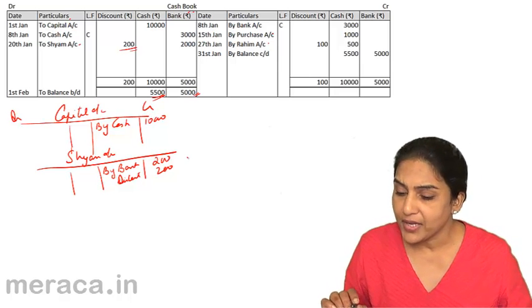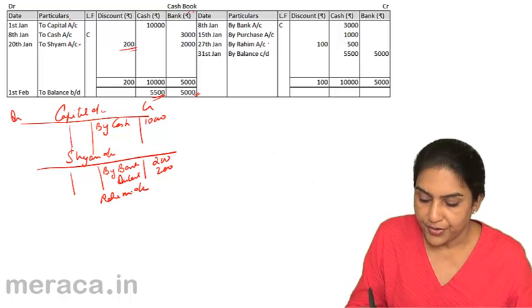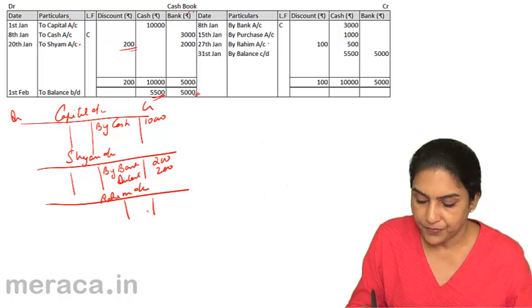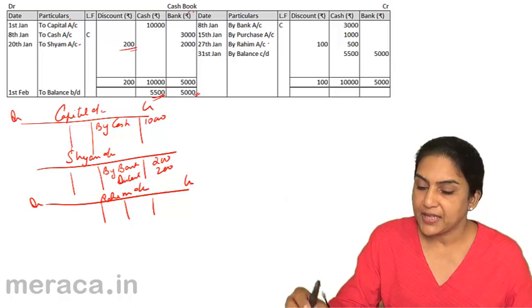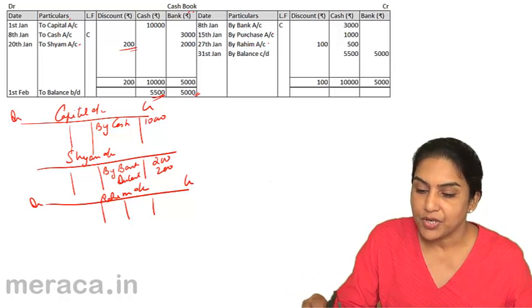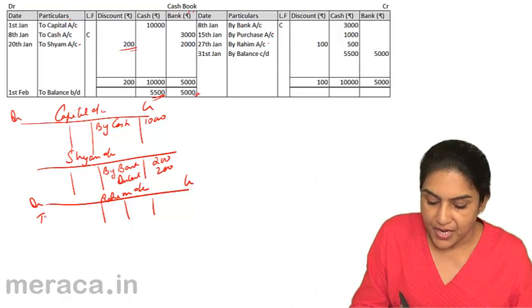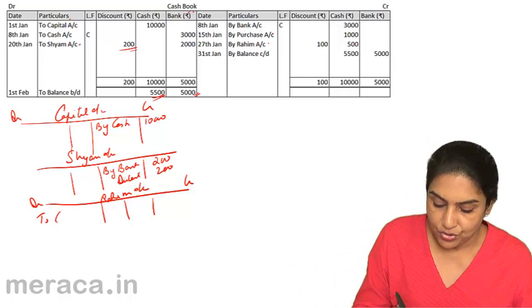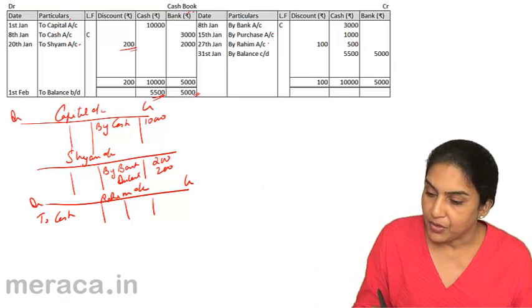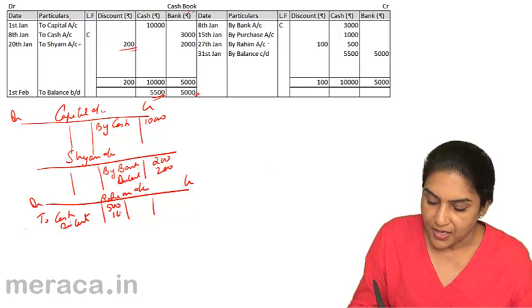To take one example, we take Rahim's account, since it has a discount. Rahim's account is from the credit side of the cash book, so we come to the debit side of Rahim's account. Is this received on account of cash or bank? Cash. So we write 'To Cash, 500.' Then 'To Discount Received, 100.'